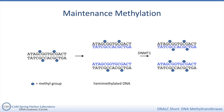It maintains the pattern of DNA methylation after DNA replication — hence the name maintenance methyltransferase or maintenance methylation. So daughter cells will inherit DNA that has the same methylation pattern as their parent cell. But how does that pattern come to be there in the first place, and how does it change in different cell types?